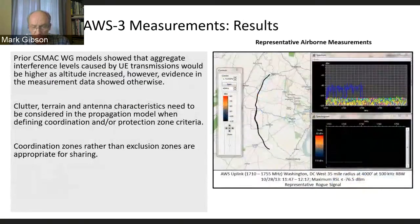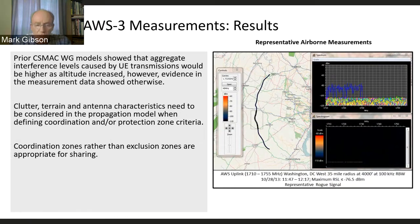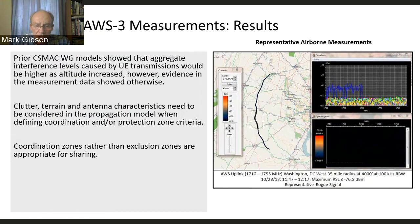The results indicated that UE powers at altitude were less than predicted by the propagation models used in the original analysis, which ultimately works toward shrinking the protection zones for these air combat training systems. Had we relied only on computational methodologies to determine those zones, we would have been unnecessarily restricted on spectrum use. We also found rogue signals at altitude — that blue line in the spectrum plot is a rogue signal, which we found interesting.